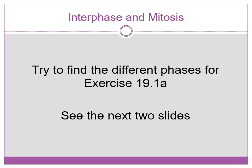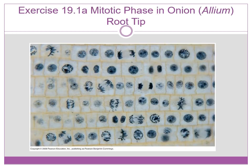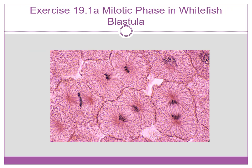Try finding these on your own. For exercise 19.1a, try to find the different phases in this fast-growing root tip of an onion — these are plant cells. You'll find interphase as well as the different mitotic phases. You can pause this slide and look for those. Then find the different mitotic phases and interphase, if you can, in these cells from developing fish.